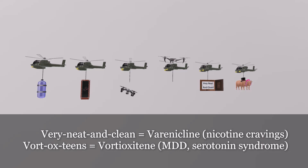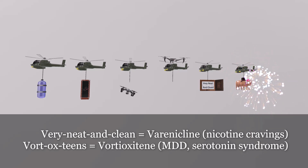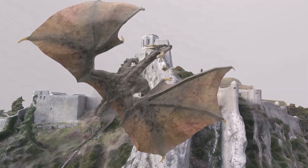Next is the very neat and clean sign for varenicline. The people in the helicopter want clean lungs — they want to stop smoking, and therefore take varenicline. Varenicline helps nicotine cravings decline and may be taken by depressed patients who are also smoking. Last but not least, the ox teens at their vort — their Jewish engagement party — the vort ox teens for vortioxetine. Vortioxetine is used in treatment of major depressive disorder and may cause serotonin syndrome if taken with other serotonergic agents.